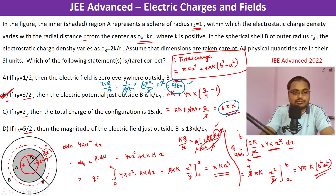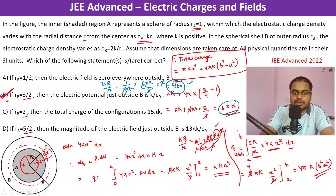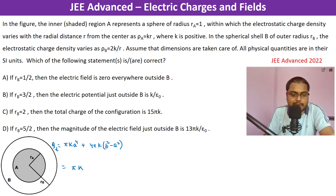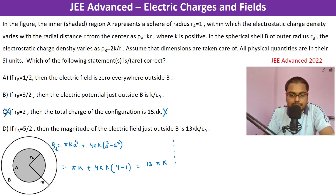For option C, with r_b = 2: Q_total = πk·(1)⁴ + 4πk·(4 - 1) = πk + 12πk = 13πk. The option claims 15πk, so option C is wrong.